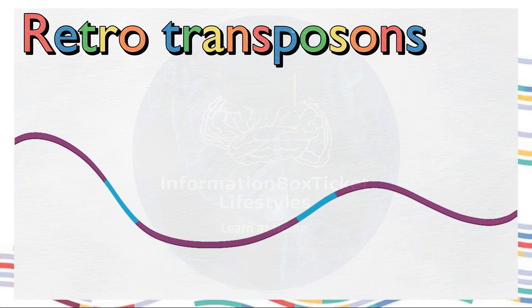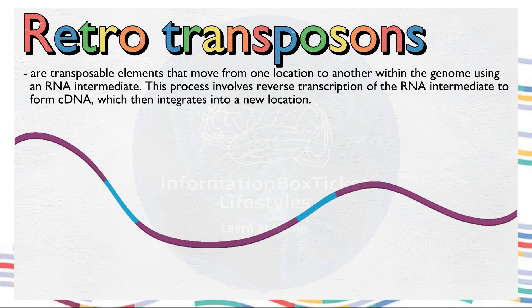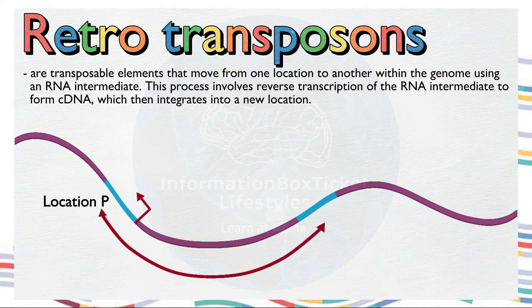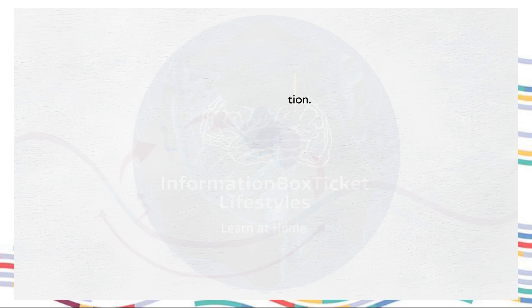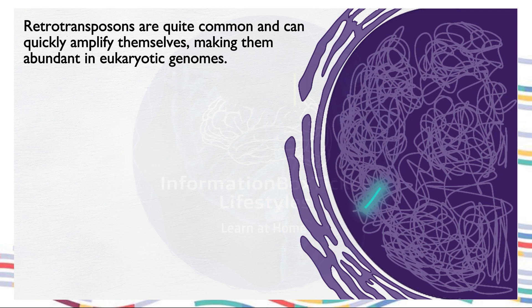In this video, we'll discuss retrotransposons. Retrotransposons are transposable elements that move from one location to another within the genome using an RNA intermediate. This process involves reverse transcription of the RNA intermediate to form cDNA, which then integrates into a new location. Retrotransposons are quite common and can quickly amplify themselves,